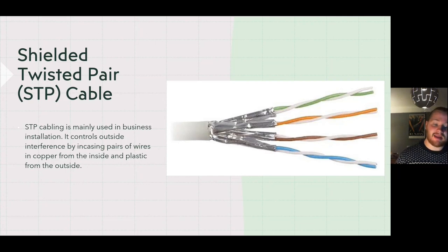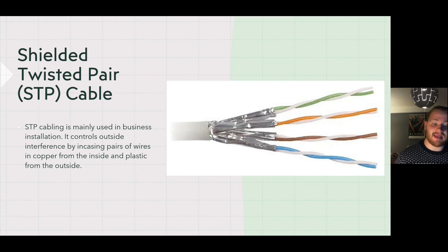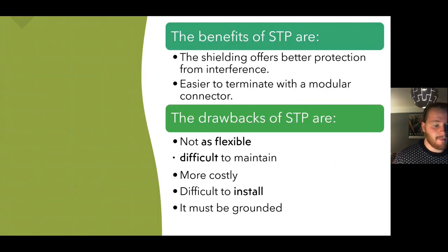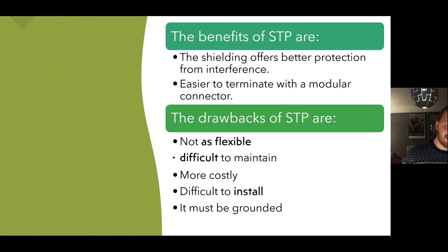Shielded twisted pair cabling is mainly used in business installations. It controls outside interference by encasing pairs of wires in copper on the inside and plastic on the outside. The benefits are that many are similar to UTP; however, the shielding offers better protection from interference and is easier to terminate with a modular connector.